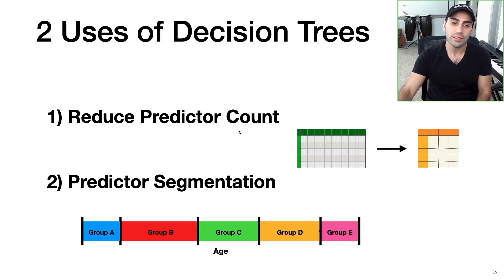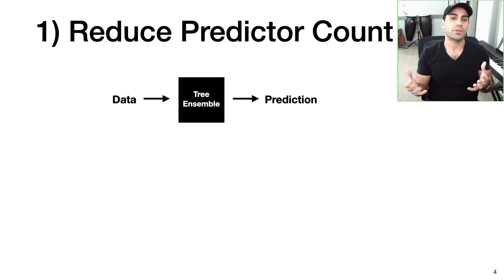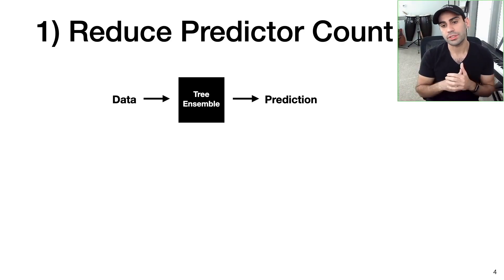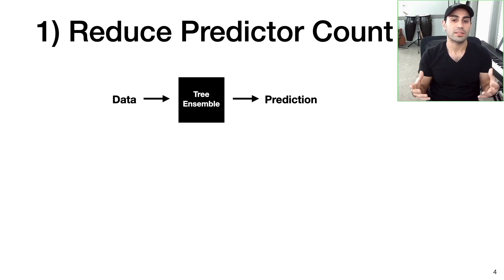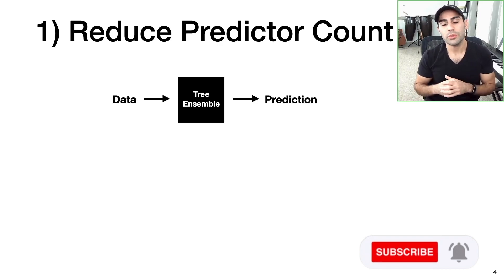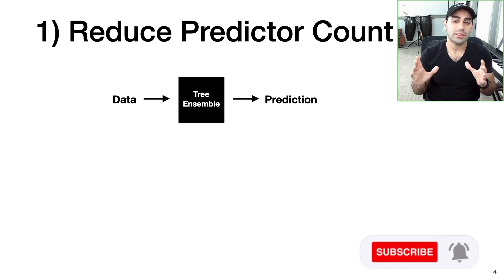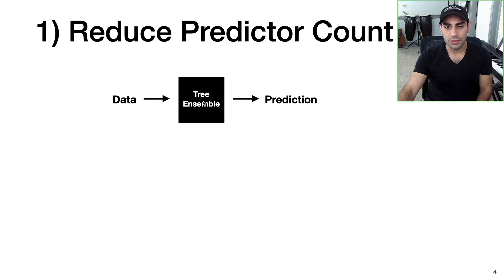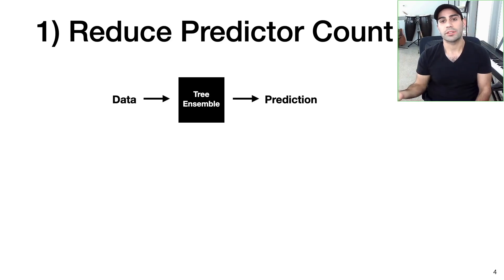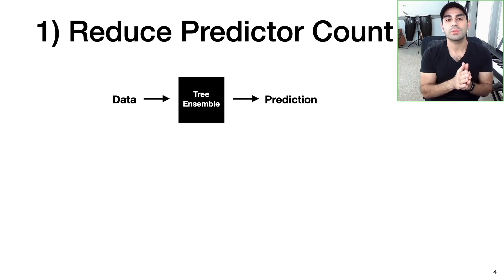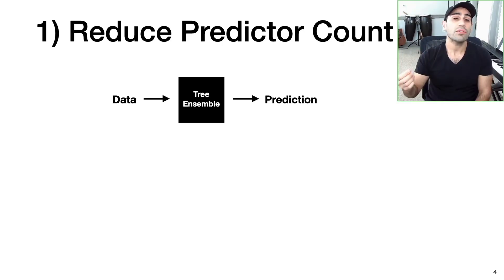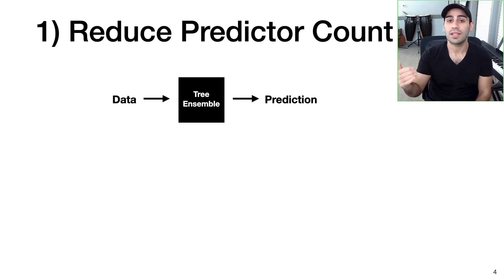In this video I'll talk about two ways we can use decision trees for more than just making predictions. The first is reducing predictor count and the second is called predictor segmentation. Starting with reducing predictor count — this goes back to the previous video where we talked about tree ensembles, where we stitched together a bunch of decision trees to make our model more robust. While tree ensembles give us many great things, all these great things come at a cost: tree ensembles are a bit of a black box. We know what we put in and we can see what comes out, but what happens in between is a bit of a mystery. Rather than using the tree ensemble to make final predictions, what we can do is take the feature importance ranking from the tree ensemble and use that to inform a simpler set of predictor variables.